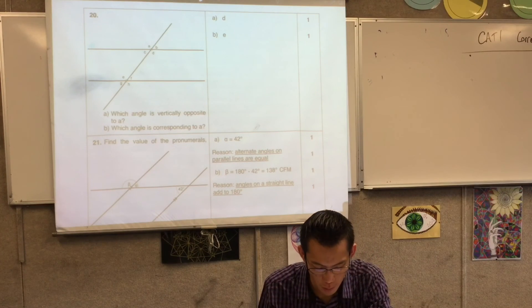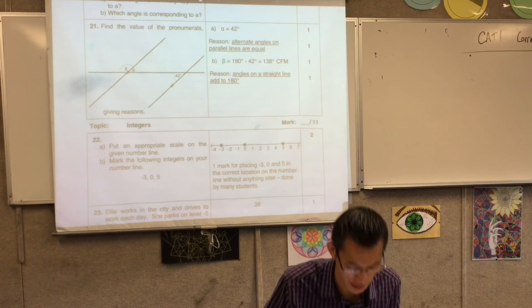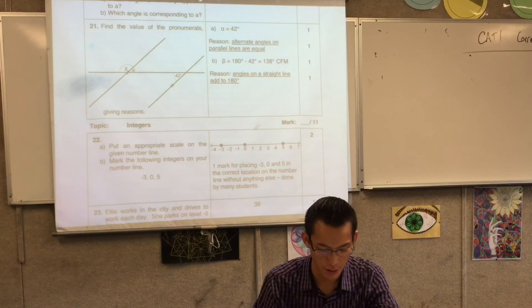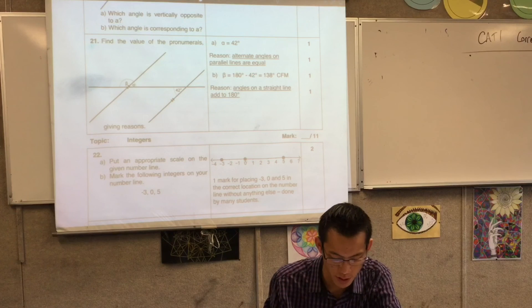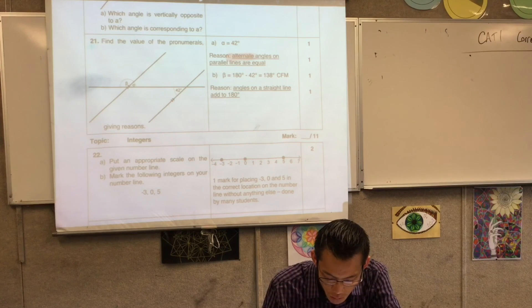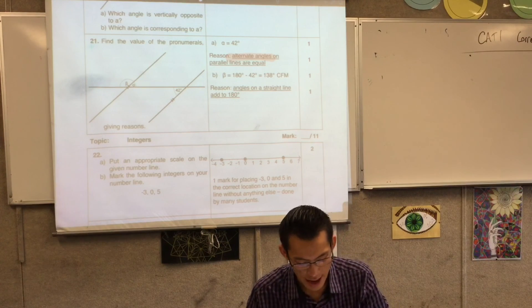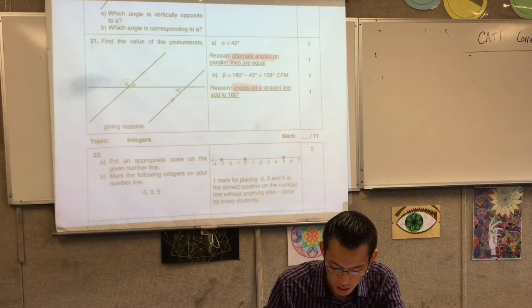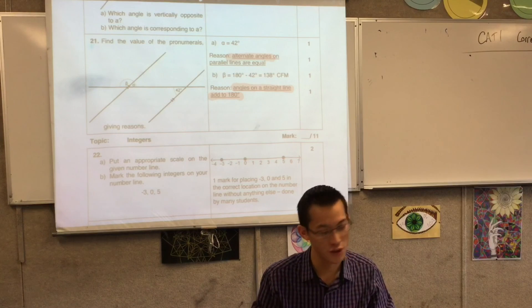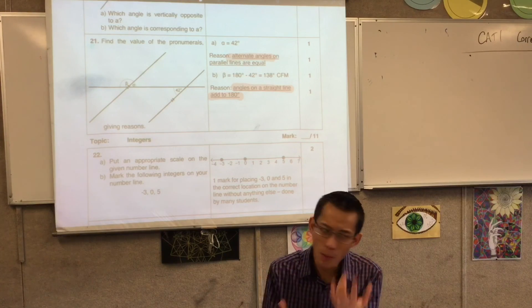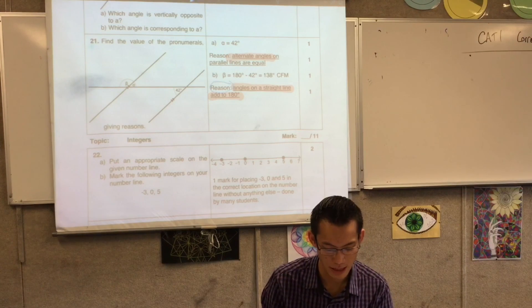I'm going to skip over 20 because I think it was quite well done. Let's have a look at 21 because here's where some problems came up. Find the value. So firstly, alpha equals 42, but we're trying to focus on the reason. So again, we were looking mainly for alternate angles. The rest of it was really helpful, but the main thing we're looking for was alternate angles. And then secondly, for part B, angles on a straight line add to 180. It's not enough to say they're supplementary, even though they are. I want to know why they're supplementary. That's why it says reason. So provide the reason and that's the really important part.